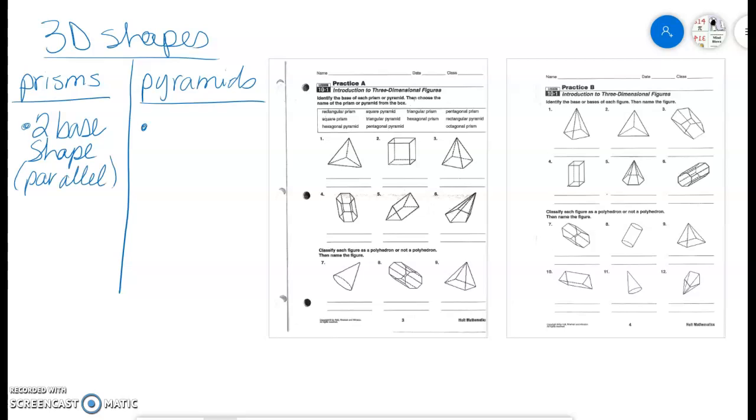A pyramid, however, will only have one base shape, and since there's only one, it obviously cannot be parallel. The second thing that differentiates prisms from pyramids is that prisms have rectangular sides, whereas pyramids have triangular sides.